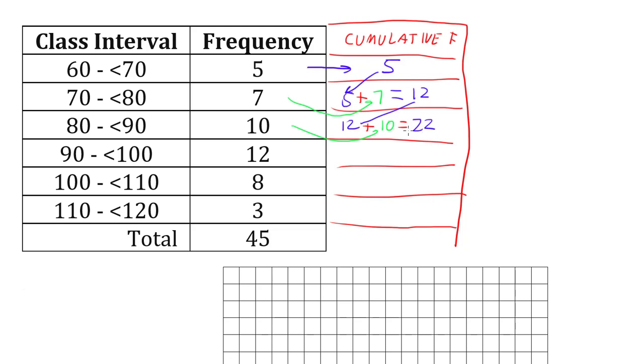And we keep adding on like this, 22 plus 12 is 34. 34 plus 8 is 42, and 42 plus 3 is 45.